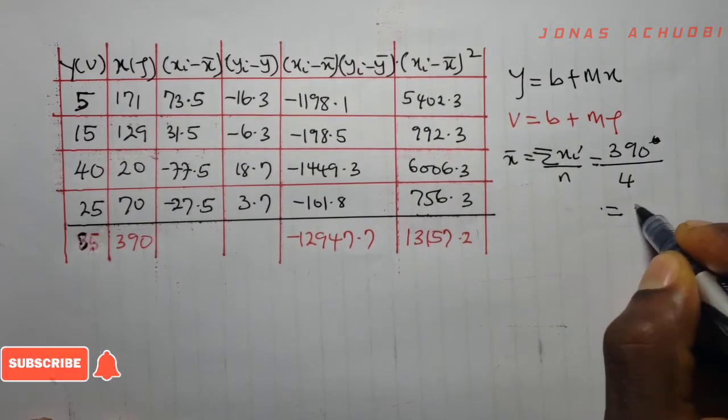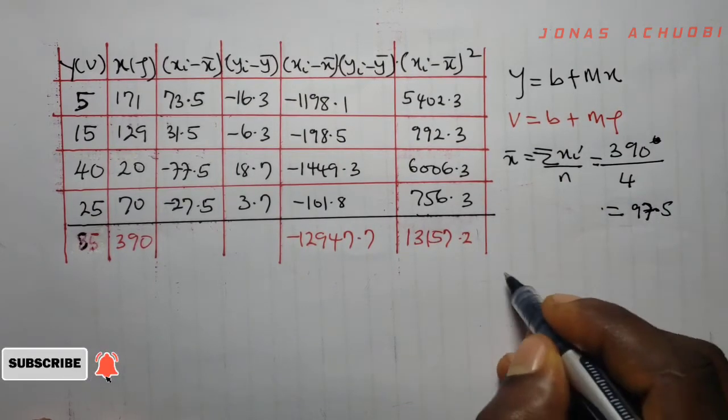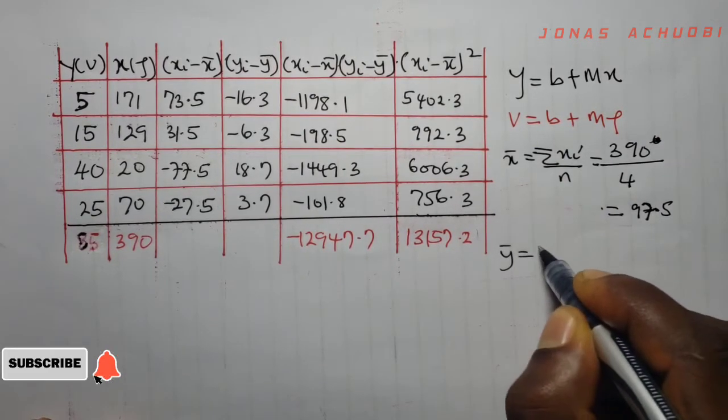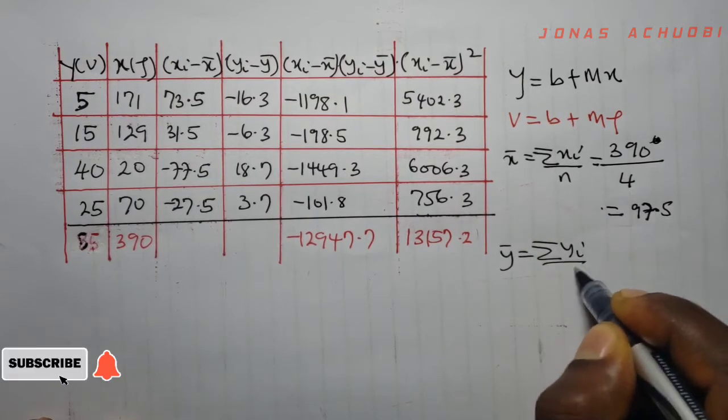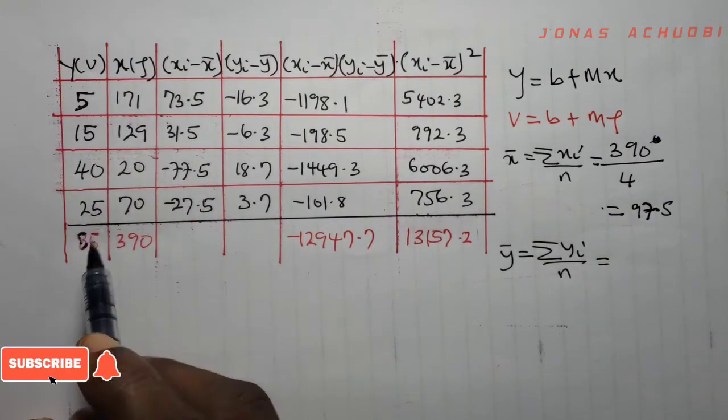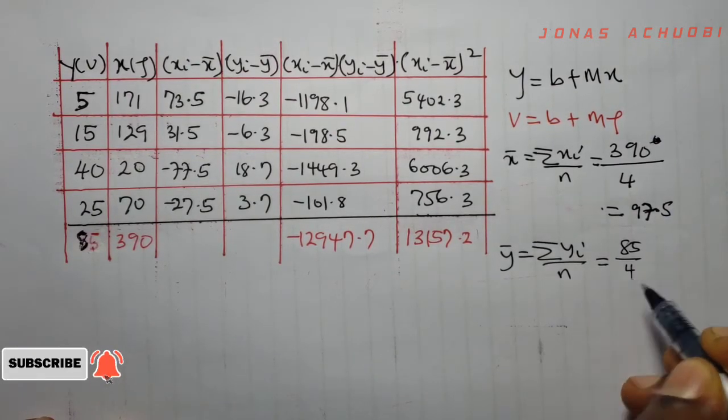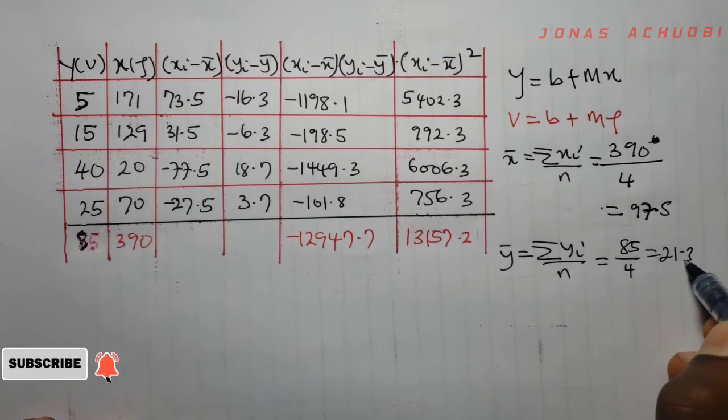We now get also our y bar which is sigma yi over n, and that gives us sigma yi is 85 over 4, which is 21.3.